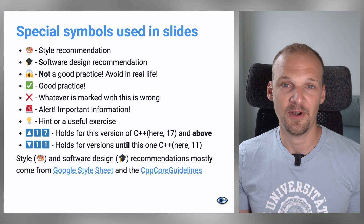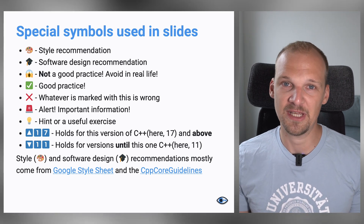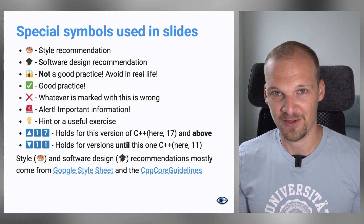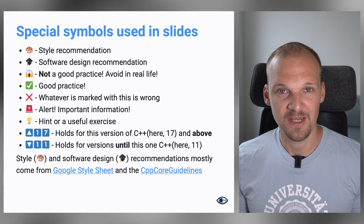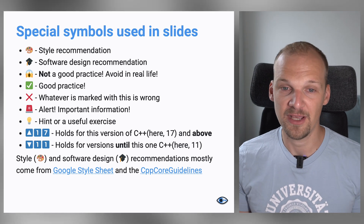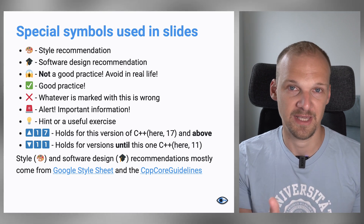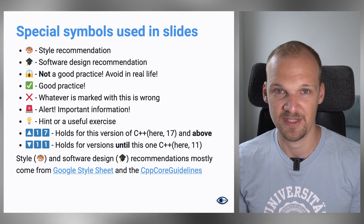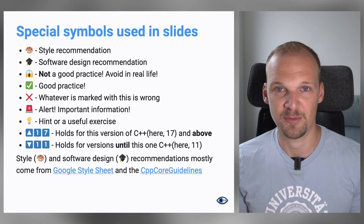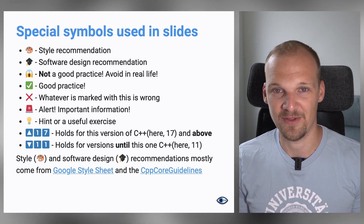I will show again the slide with all the symbols and emojis that I will be sprinkling all over my slides. There are style recommendations, design recommendations, and some things to indicate something is not best practice. I will also show symbols to indicate which version of C++ the information corresponds to. A triangle pointing up with numbers means it holds for that version of C++ and up — say 17 means C++17 and up. A triangle facing down means it holds only for versions until that version, but not inclusive. If you get confused, feel free to return to this slide.